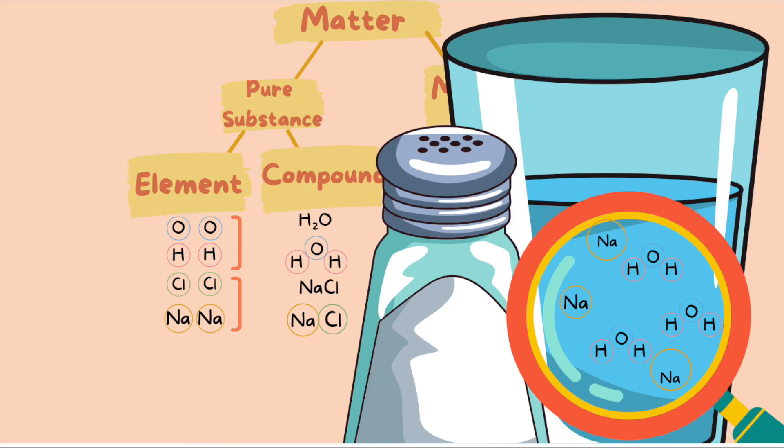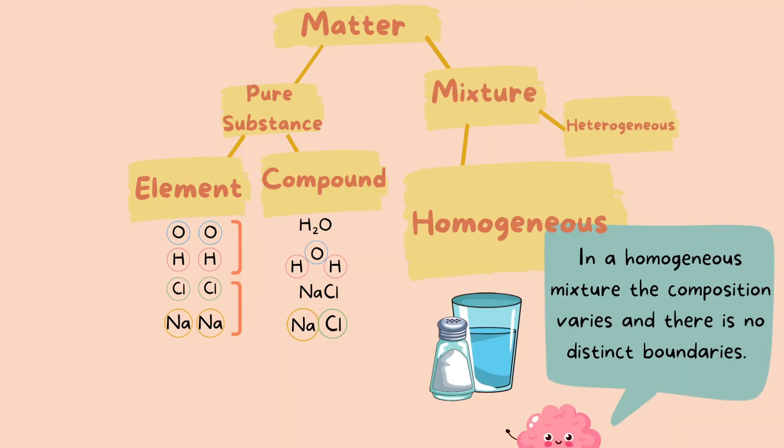Remember, what makes this a mixture is that we have two pure substances. In this case, salt is an element, which is a pure substance, and water is a compound, which is also a pure substance. Two pure substances combined together makes this a mixture. And what makes it homogeneous is the appearance of the substance is uniform.